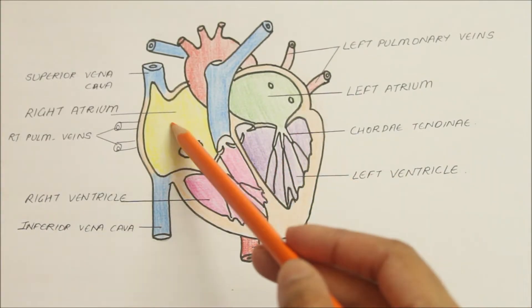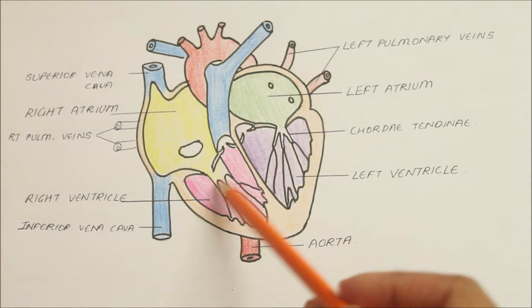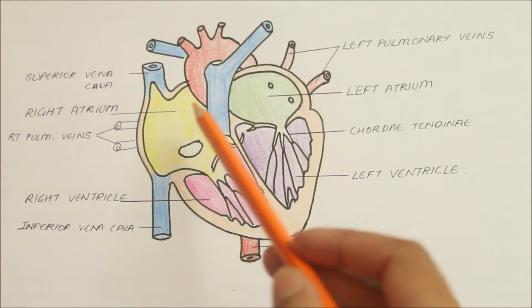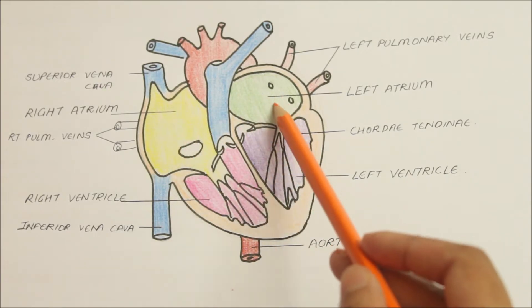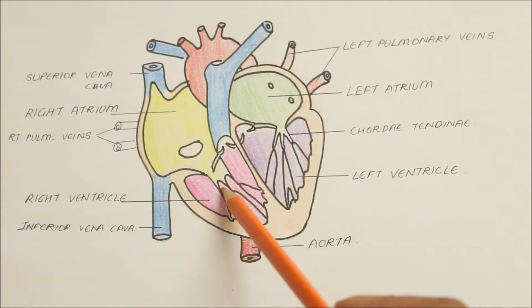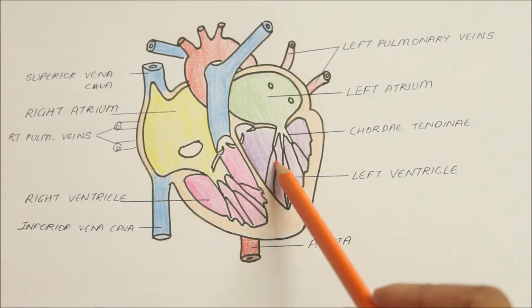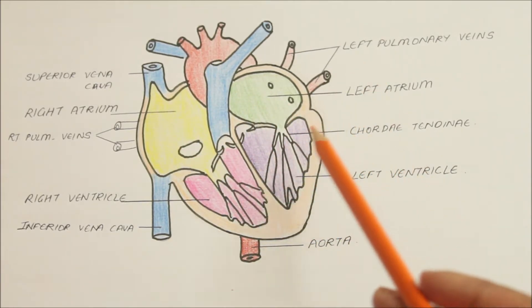Now let's learn about each of the four chambers — the right atrium, left atrium, right ventricle, and left ventricle — in detail.